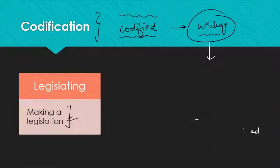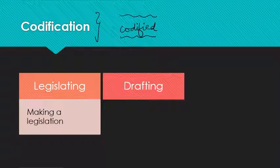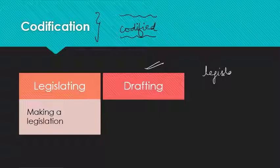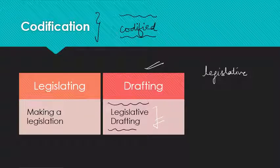Codification is the process of making a legislation out of a law which was not written, like a custom. The process of writing it down — making this legislation — is what is known as drafting, specifically legislative drafting. A person has to draft the legislation, and this technique of legislative drafting is one that requires a lot of skill.